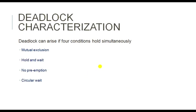The question is: we know what deadlock is, but how does deadlock come? Deadlock comes when any of four conditions — or all the conditions — occur. Then we can say there is definitely a deadlock situation. Those four conditions are: mutual exclusion, hold and wait, no preemption, and circular wait.